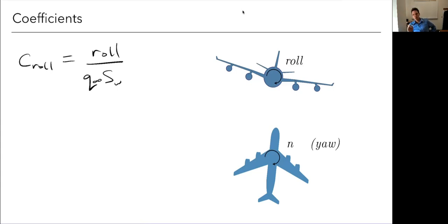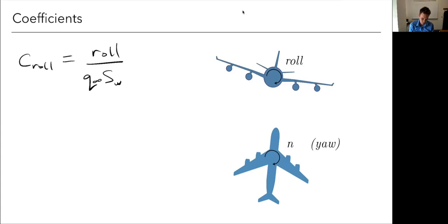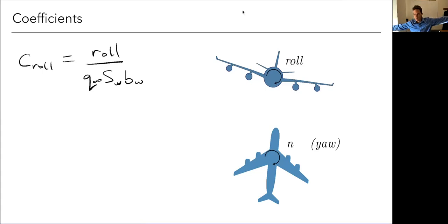Remember for pitching moment coefficient, we also had to normalize by chord — we used the mean aerodynamic chord. For rolling moment by convention, we use the wingspan. That's because for a rolling moment, changing the chord doesn't affect rolling inertia very much, whereas changing the span has a big impact.